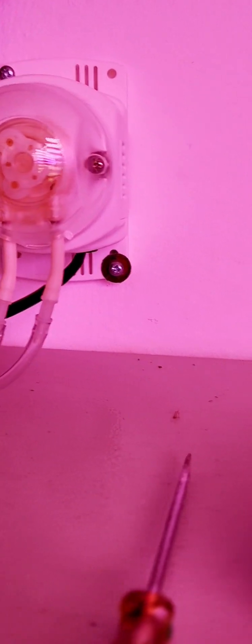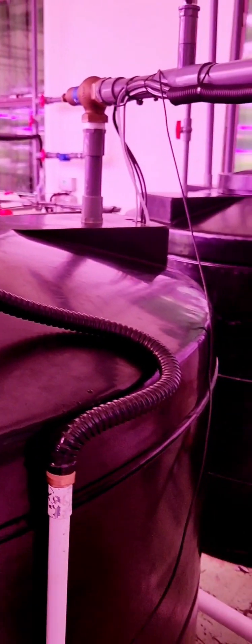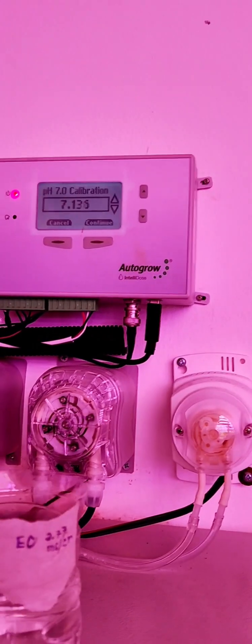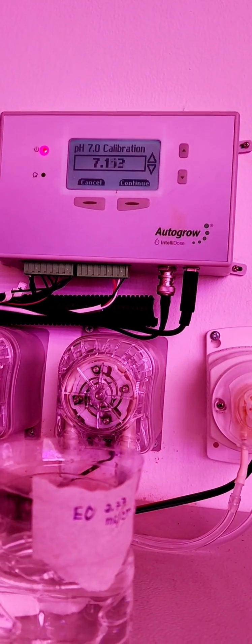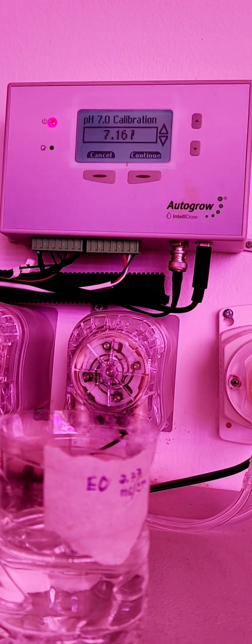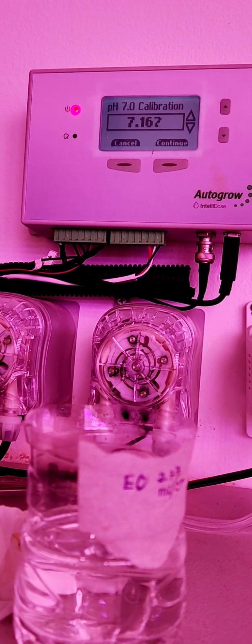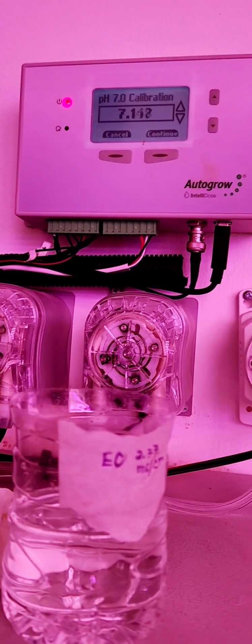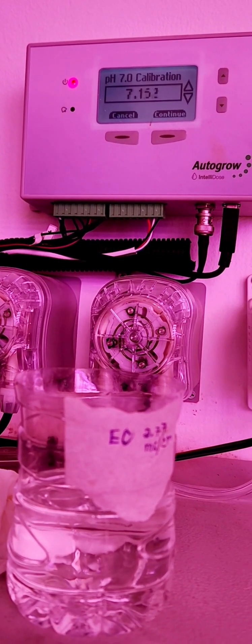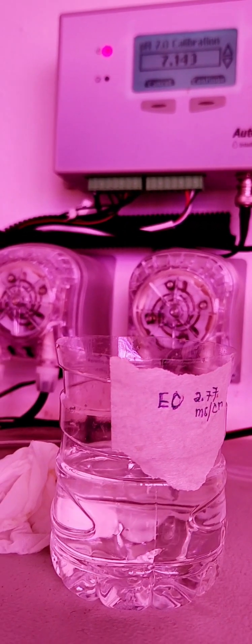This is the calibration solution, which is this one. 7.0. Now, let's just dip into the container. But, I cannot reach. I just go this way. Because this probe is actually installed already in the tank. I cannot pull it out. Because the cable is very short. I just hold in this way. For me to calibrate. As you can see. The figure is going up. We should have to be getting 7.0.